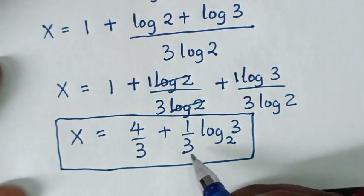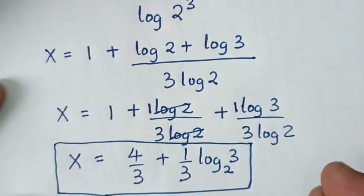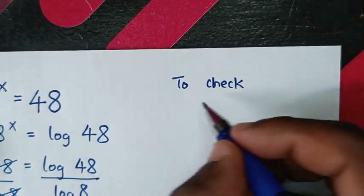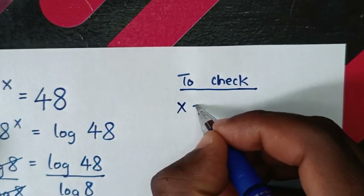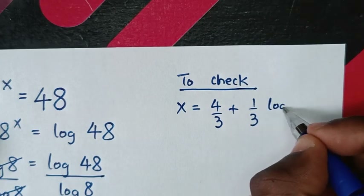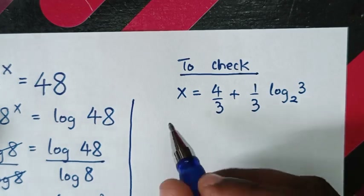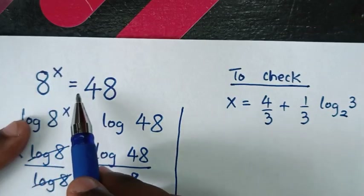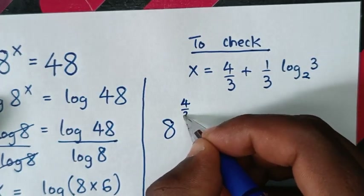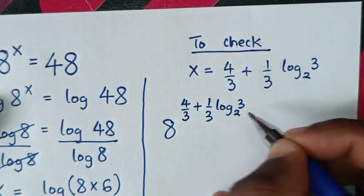x is equal to 4 over 3 plus 1 over 3 log of 3 base 2. Now let's check this answer if it is correct. From the value of x equal to 4 over 3 plus 1 over 3 log of 3 base 2, we'll substitute into the problem which is 8 power x is equal to 48, so it will be 8 power of 4 over 3 plus 1 over 3 log of 3 base 2.